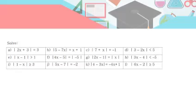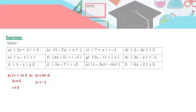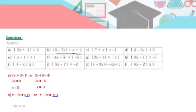Now let's solve equalities and inequalities. Part a: absolute value of 2x plus 3 equals 3. First case: 2x plus 3 equals 3, so 2x equals 0, x equals 0. Second case: 2x plus 3 equals minus 3, so 2x equals minus 6, x equals minus 3. Solution set: minus 3 and 0. Part b: absolute value of 5 minus 7x equals x plus 1. Take the same and the opposite, move variables and numbers to each side, and get x equals one half or x equals 1. Part c: absolute value of 7 plus x equals minus 1 — this is impossible, since an absolute value cannot equal a negative number.